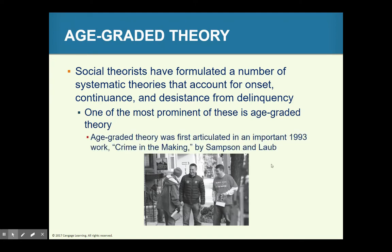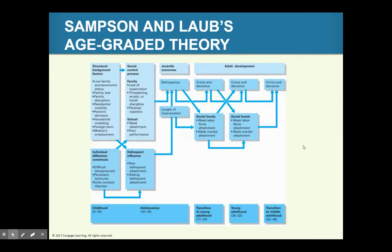Age-graded theory was first articulated in the important 1993 work Crime in the Making by Sampson and Laub. There is a detailed slide you're welcome to review on your own that shows how everything is related. There are turning points that occur in the life course, and different criminologists have formulated systematic theories around how those turning points play out.